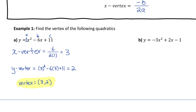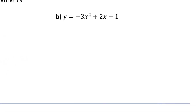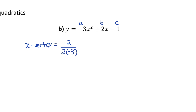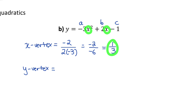Now let's try part b, which will be a little more difficult because we'll get some fractions. For this quadratic in standard form, we have a equals negative 3, b equals 2, and c equals negative 1. To find the x-coordinate of the vertex, I do the negative of the b value — so negative 2 — divided by 2 times the a value of negative 3. I replace the x's in the standard form equation with 1/3 and calculate its corresponding y value.